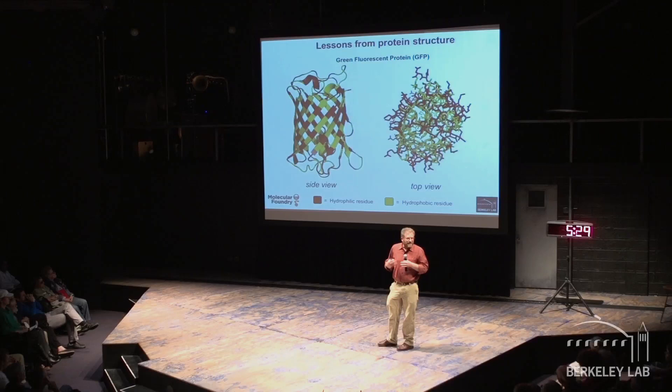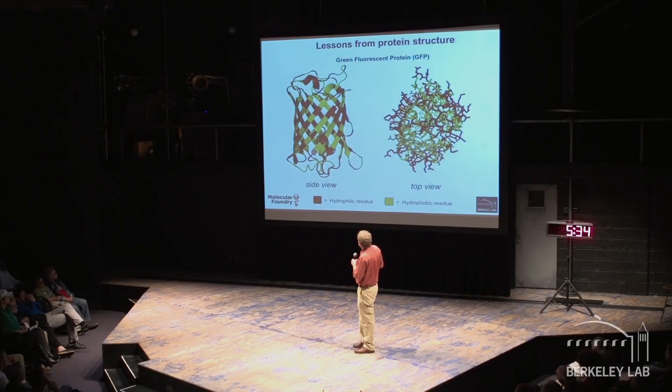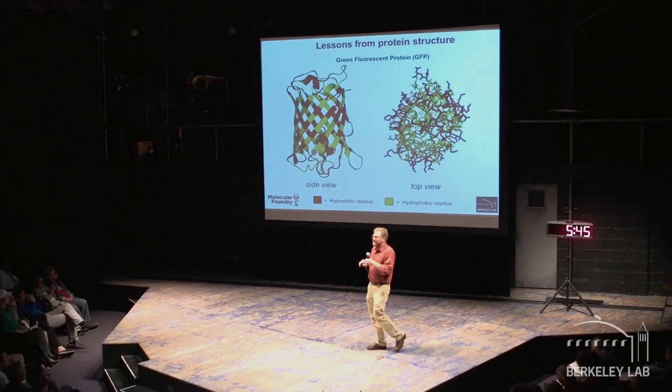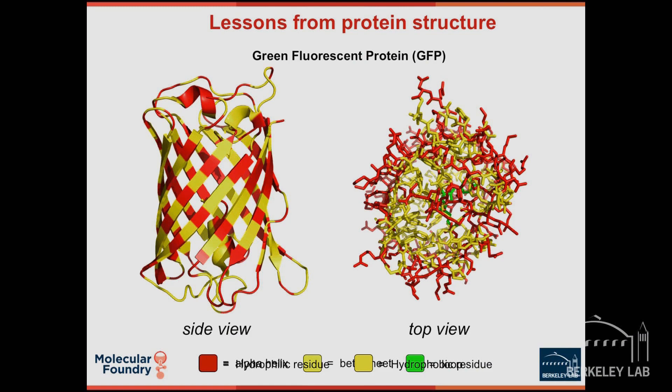Yellow is hydrophobic — that means it hates water. What you'll see is a striping pattern. That sequence arrangement puts all the yellow groups on the inside and all the red groups on the outside. It makes sense: these proteins exist in water, and the only way to hide from water is by clustering hydrophobic groups into the inside. We applied this rule to non-natural peptoids, showing the chemical structure where yellow is the hydrophobic group and red is the hydrophilic group — a two-fold repeating pattern.